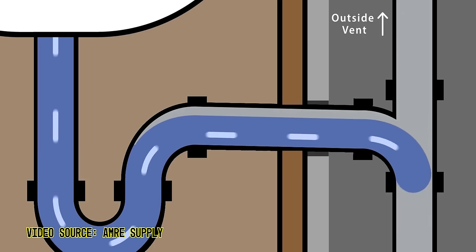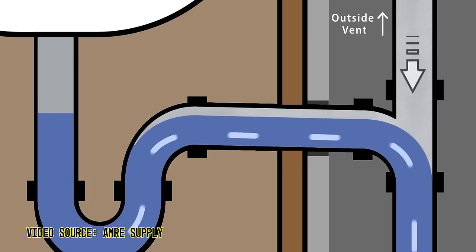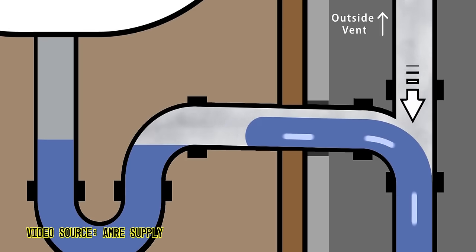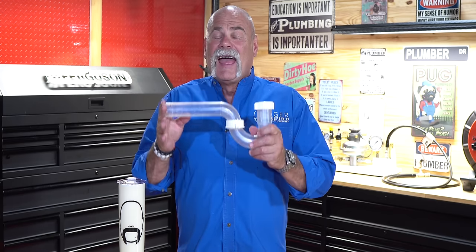Now, a P-trap is a little bit opposite. Water comes through and goes across, and there's nothing there to suck it unless they install it wrong. And I'll talk more about that in a minute — how an S-trap can actually be installed where it works like a P-trap. So why wouldn't you want sewer gases leaking back into your house?